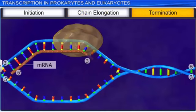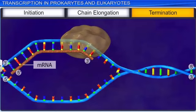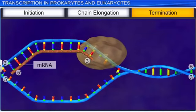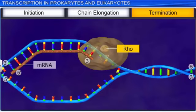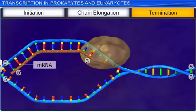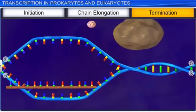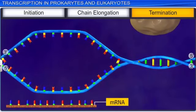The final stage of transcription is termination, in which the polymerase along with termination factor represented by Rho reaches the terminator region, and newly created mRNA falls off along with the enzyme. This marks the end of prokaryotic transcription.